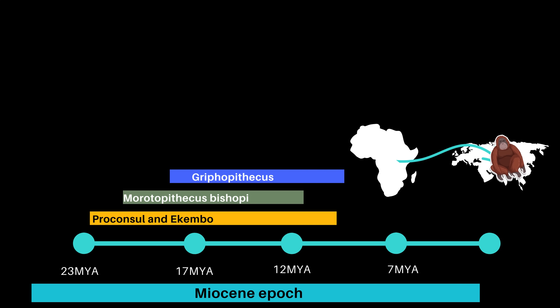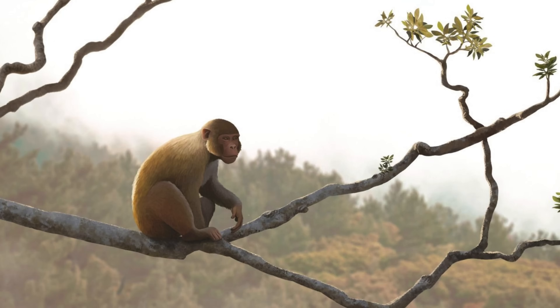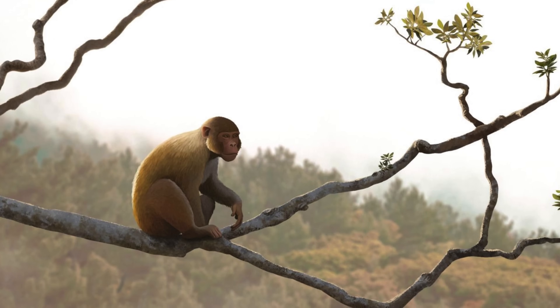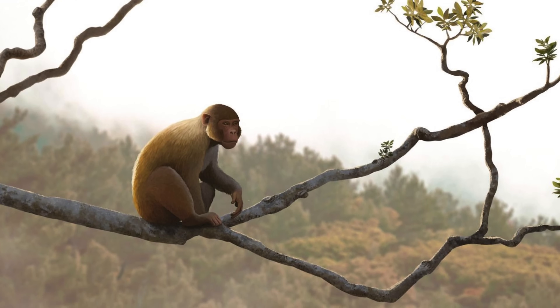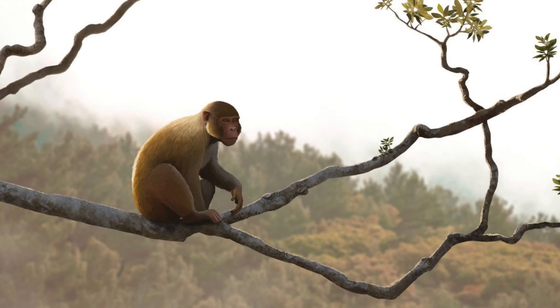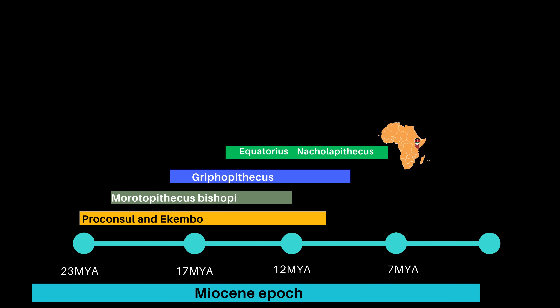Gryphopithecus had thickly enameled molars suited for crushing and grinding tough objects, likely eating terrestrial foods with grit. Their jaws and limb fragments suggest they were generalist tree climbers, lacking the specialized suspensory abilities of modern apes.